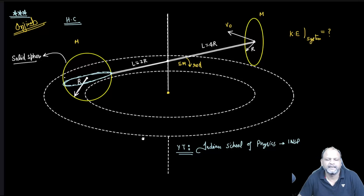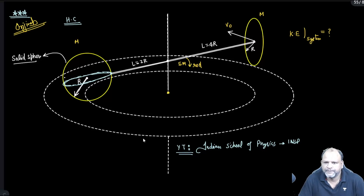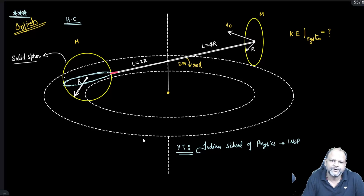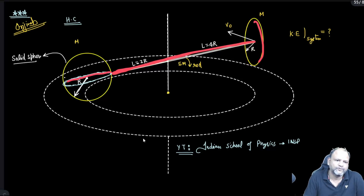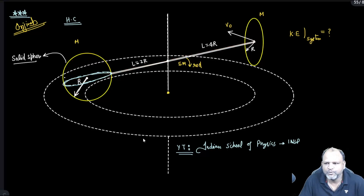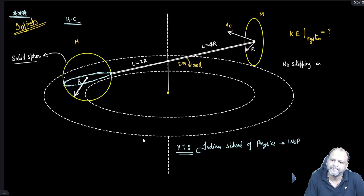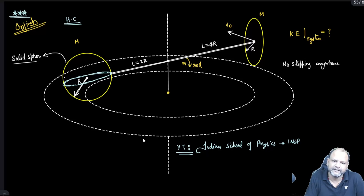Hello everyone. Today I give this question in one of the sessions as homework, taken from the angular momentum and 3D rotation class on YouTube. We are going to find the kinetic energy of the system. There is a rigid rod of length 6r, its mass is m. There is a disk connected here, and on the other side through a rigid ring a sphere is connected, and there is no slipping anywhere. We have to calculate the total energy of the system.